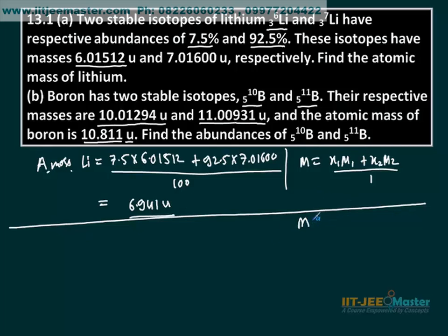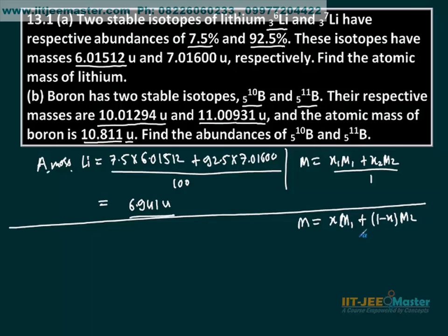Here we can use this type of formula. Suppose atomic mass is given. Let x be the fraction of the first type of atom, multiplied by mass of the first type of atom, plus (1 minus x) — since if x is the fraction of one, the fraction of the other becomes 1 minus x — multiplied by the atomic mass m2 of the second type. Note that x1 plus x2 must equal 1, so x2 equals 1 minus x1.